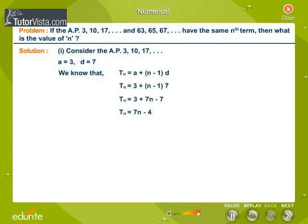Therefore T_n equals 7n minus 4. Let this be equation 1. Now consider the second AP, that is 63, 65, 67, and so on. Here a equals 63 and d equals 2.